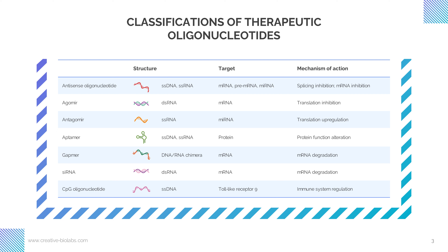Antisense oligonucleotides, or ASOs, are short, synthetic, chemically modified chains of nucleotides that can potentially target any gene sequence of interest. Typically, an ASO is a single-stranded DNA or RNA that complementarily binds to a target mRNA sequence within the cell.